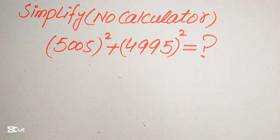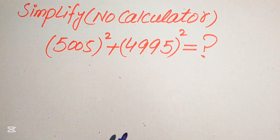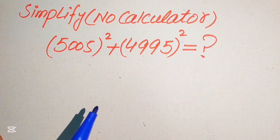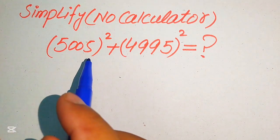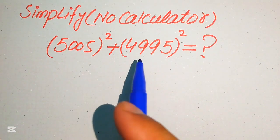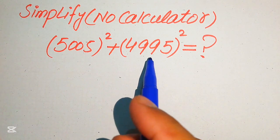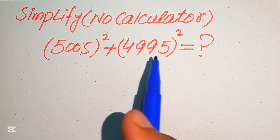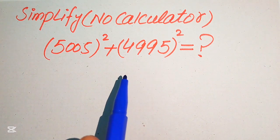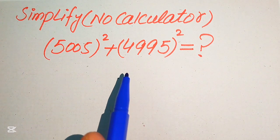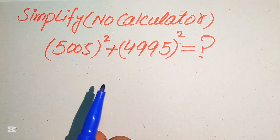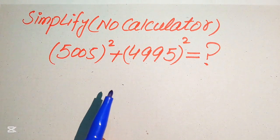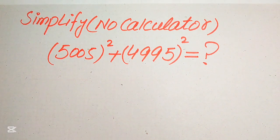Hello everyone, today I want to show you how to simplify this nice algebraic expression: 5005 whole square plus 4995 whole square. In this problem, a calculator is not allowed, so we will show all of the working on paper. If you have any other method in mind, please don't hesitate to write it in the comment section.